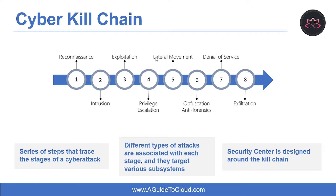The fifth stage is Lateral Movement — the act of moving laterally to connected servers to gain greater access to potential data. The sixth stage is Obfuscation and Antiforensics. To successfully pull off a cyber attack, attackers need to cover their entry. They will often compromise data and clear audit logs to try to prevent detection by any security team. The seventh stage is Denial of Service, which involves disruption of normal access for users and systems to keep the attack from being monitored, tracked, or blocked.